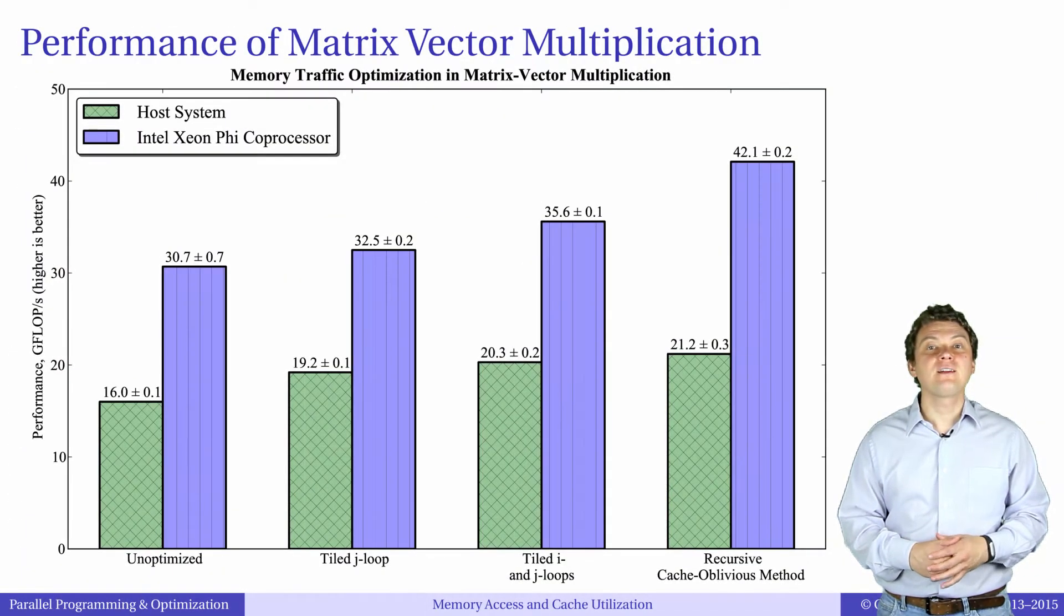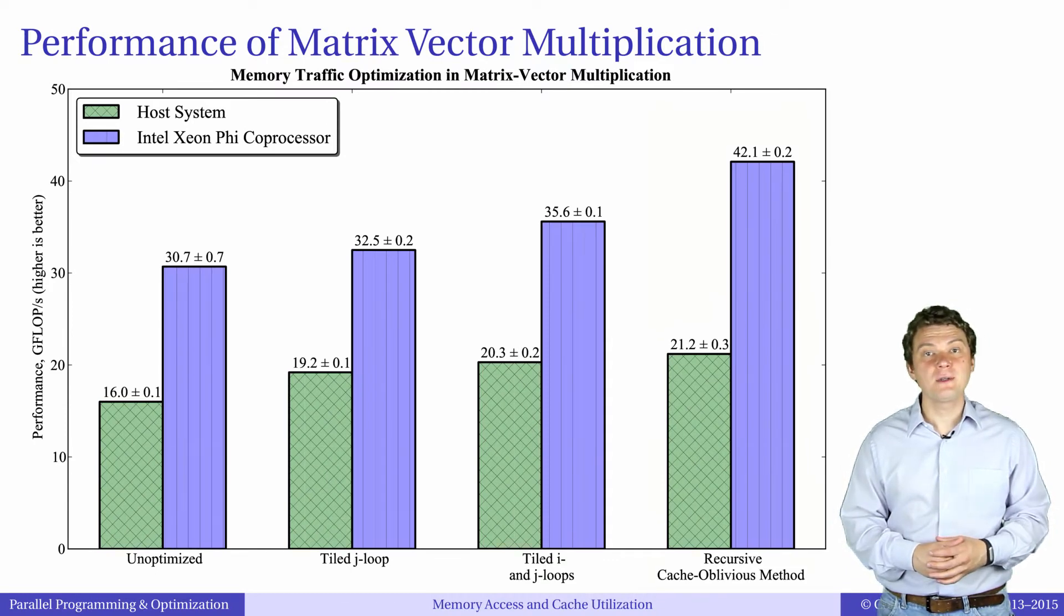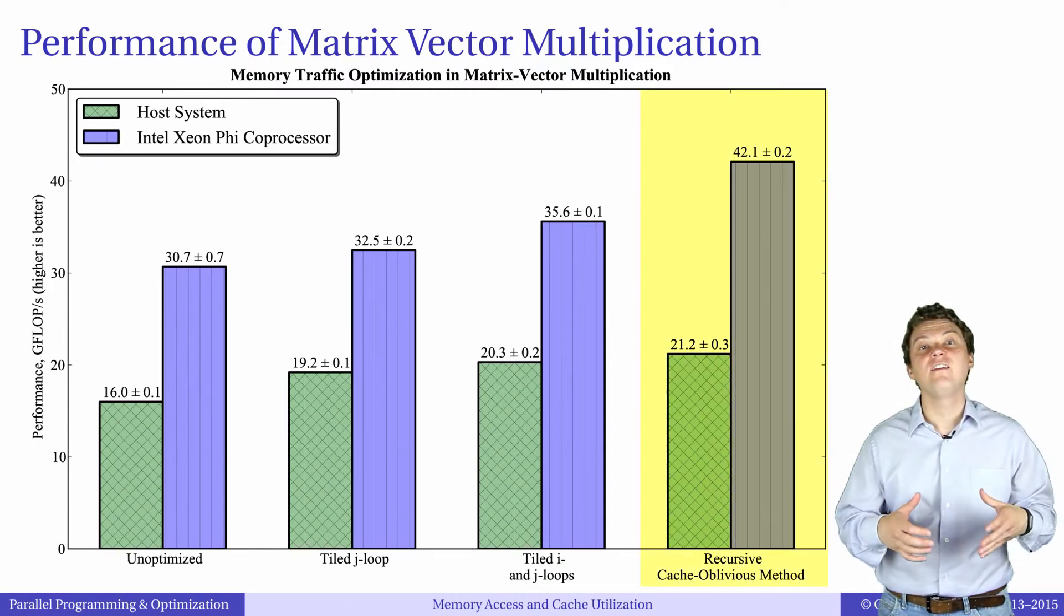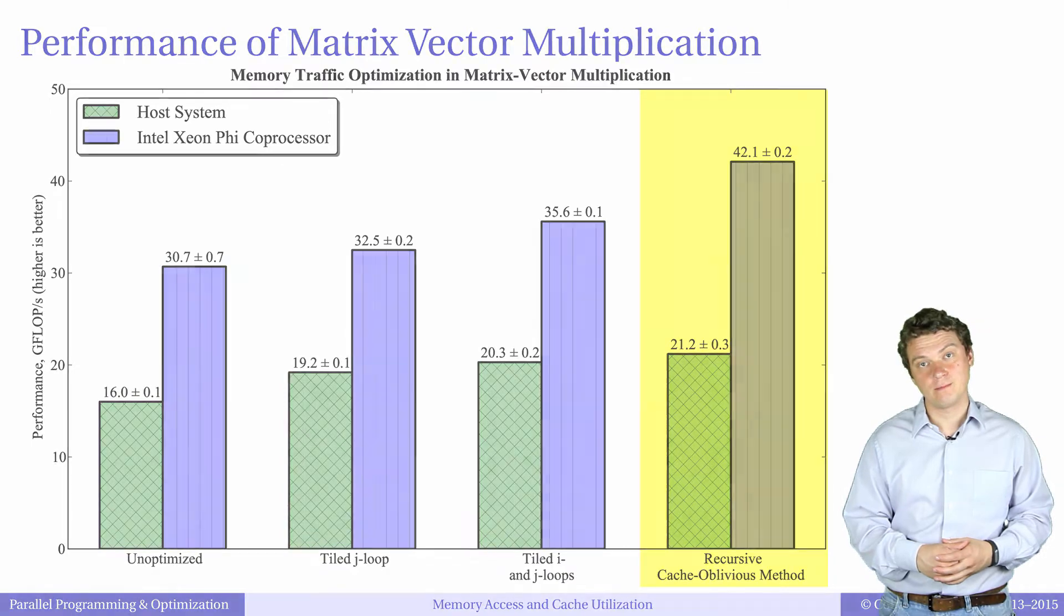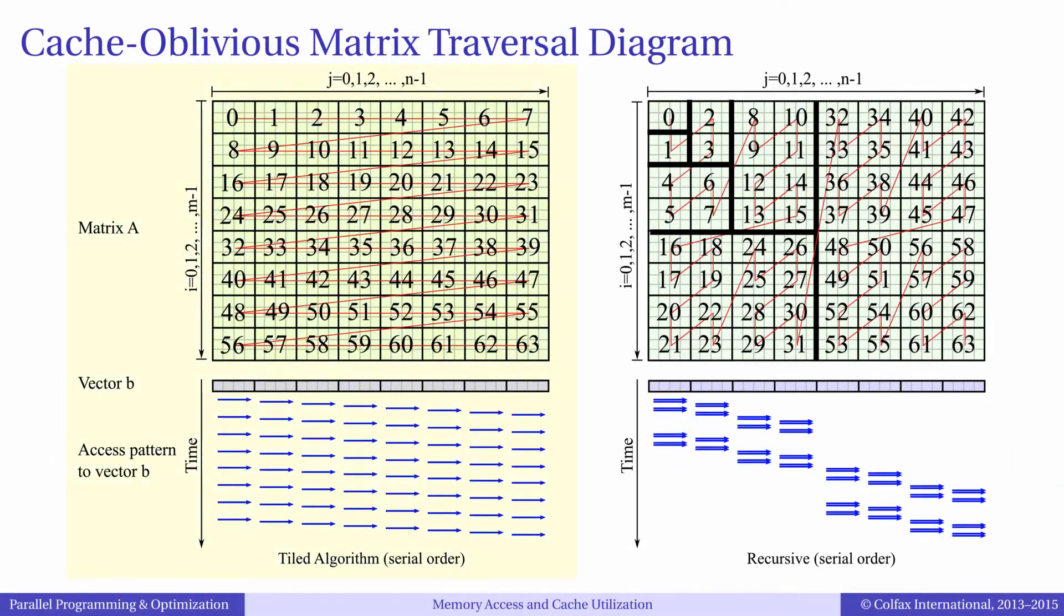Now we will discuss an alternative approach to memory optimization based on recursive divide-and-conquer algorithm. In this diagram, the panel on the left explains how to traverse the data of matrix A and vector B in the tiled algorithm.